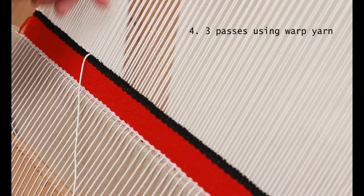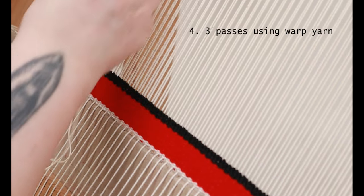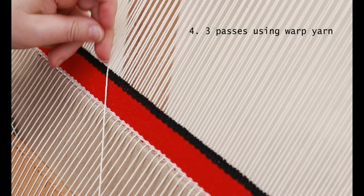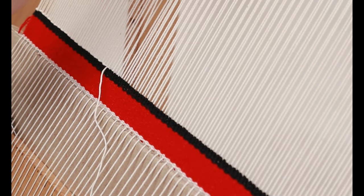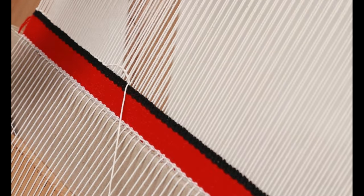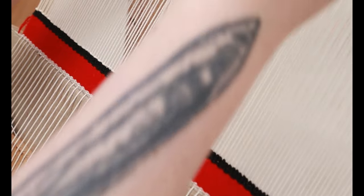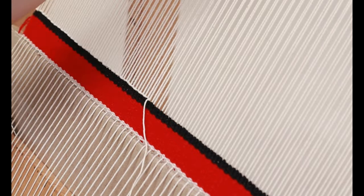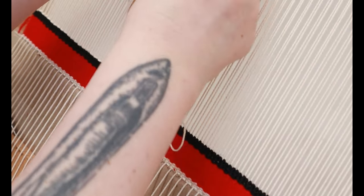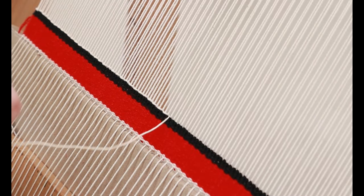Next we're doing three passes of the warp thread. Whatever you've used for the warp is what you're also going to use for these three passes. These are going to be pulled out once the tapestry is off the loom, so that's why we've done it in the warp to give the correct spacing and make it easy to pull out later.